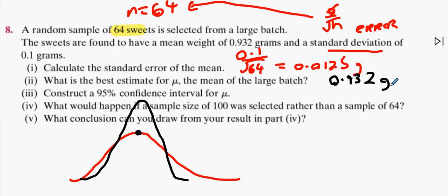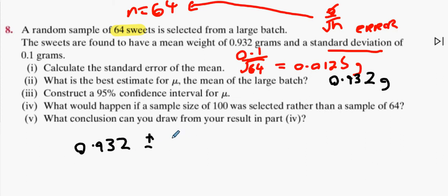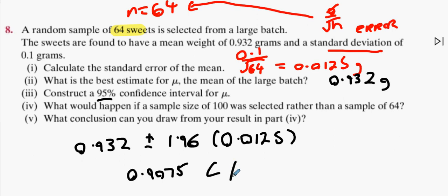Construct the 95% confidence interval. Same thing as last one. That's our average, 0.932, plus or minus 95% indicates 1.96, and I also have to use the standard error. We already have the standard error, 0.0125. Add it on, take it away and you'll end up with 0.9075 less than mu less than 0.9595 grams.